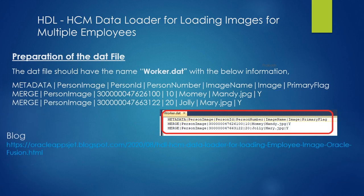Now the second step is to prepare the dat file. The dat file name should be worker.dat for loading images for employees. The name should be exactly the same — if you change it, the loader program may complete with error. You can get the sample file from the blog mentioned below.